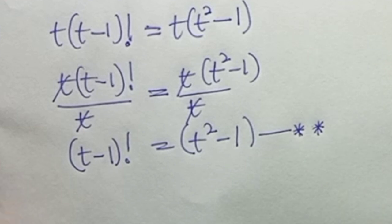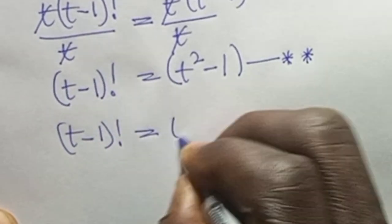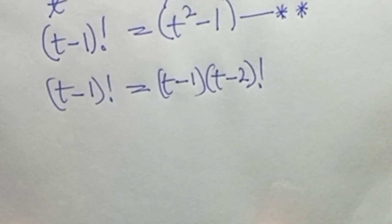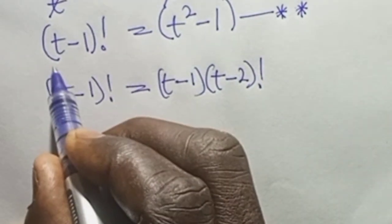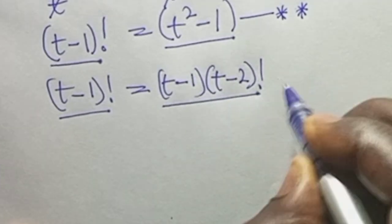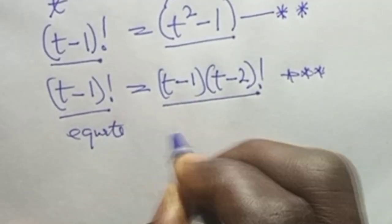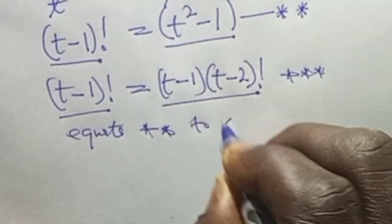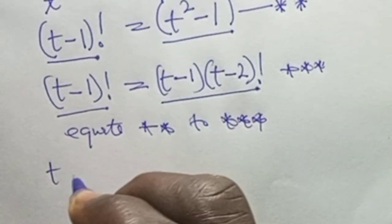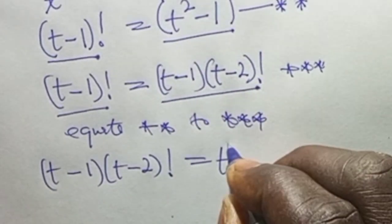Let's call this equation 2-star. But (t minus 1) factorial also equals (t minus 1) times (t minus 2) factorial from our previous explanation — call this equation 3-star. We equate equation 2-star to equation 3-star, giving: (t minus 1) times (t minus 2) factorial equals t squared minus 1.